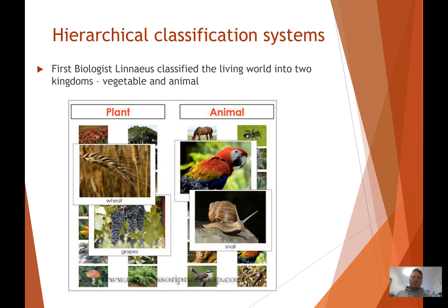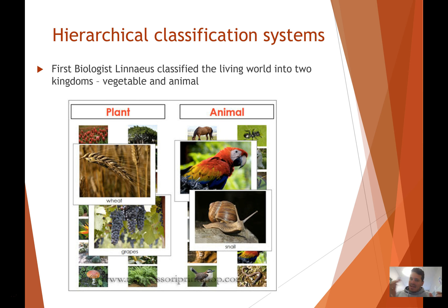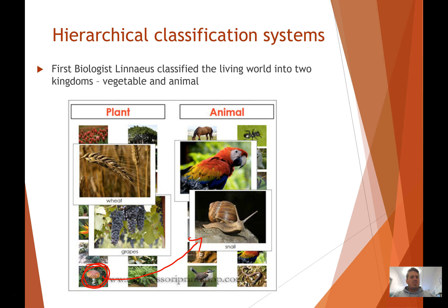Let's go through classification systems. A little bit of history — the first biologist, Linnaeus, classified the living world into two different kingdoms: the vegetable, or plant kingdom, and the animal kingdom. This was great at the time because it meant we were starting to look at how things are more closely related to each other. But there were very big issues. One interesting issue is that Linnaeus put fungi into the vegetable group — fungi look like plants and act like plants in many ways, but nowadays we know that fungi should actually have been put into the animal group, because they're actually closer related to animals than they are to plants.